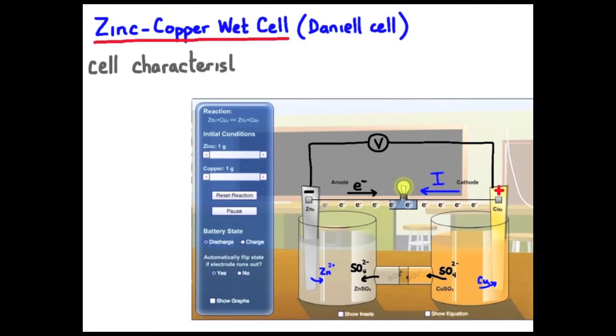The materials used will determine the EMF of the cell. This Daniel cell will produce an EMF of about one volt using zinc and copper. Another characteristic of a cell is the cell's capacity. Capacity measures the amount of charge flowing through the cell before it goes dead. You can see capacity can be measured in amp hours. That's current times time and current times time is charge. So the capacity of the cell depends upon how much chemicals you have in the cell.